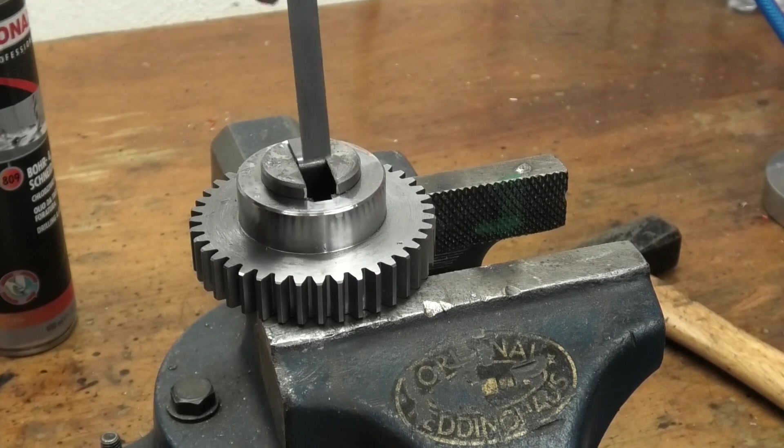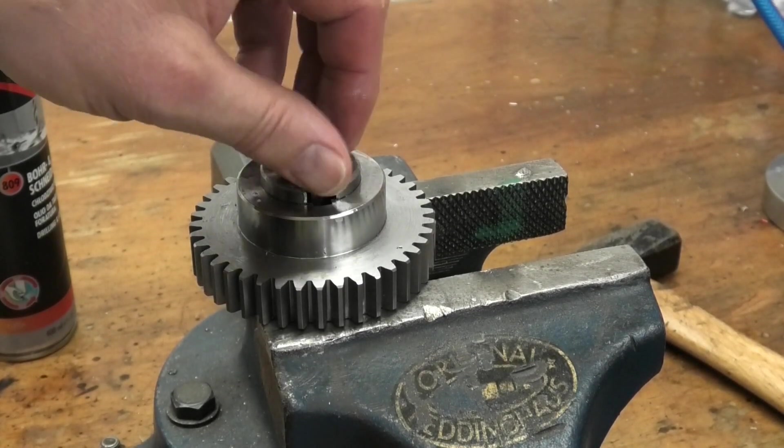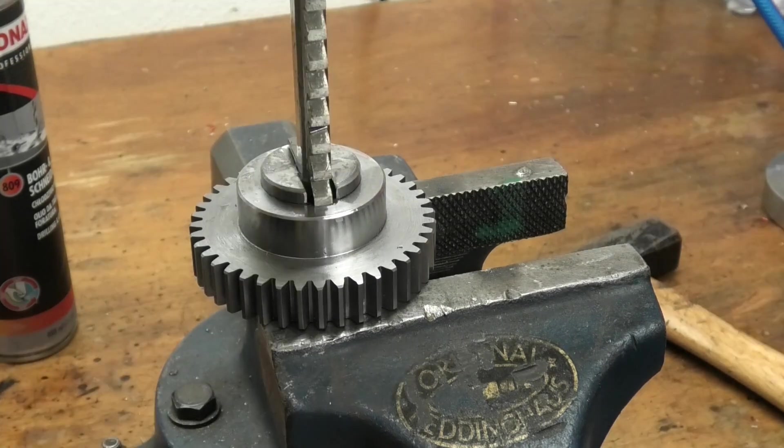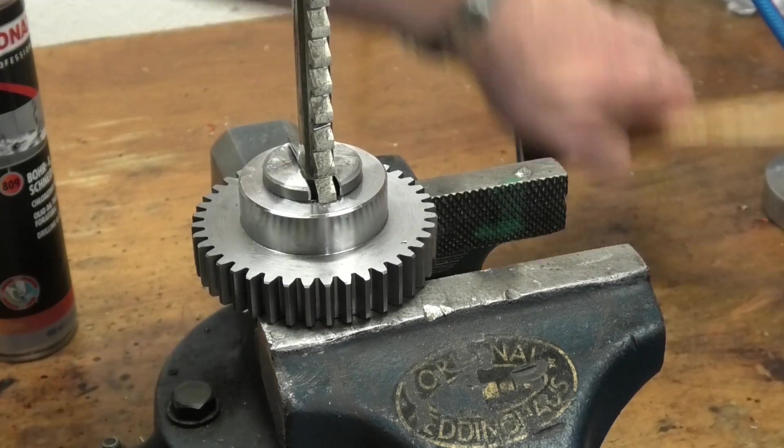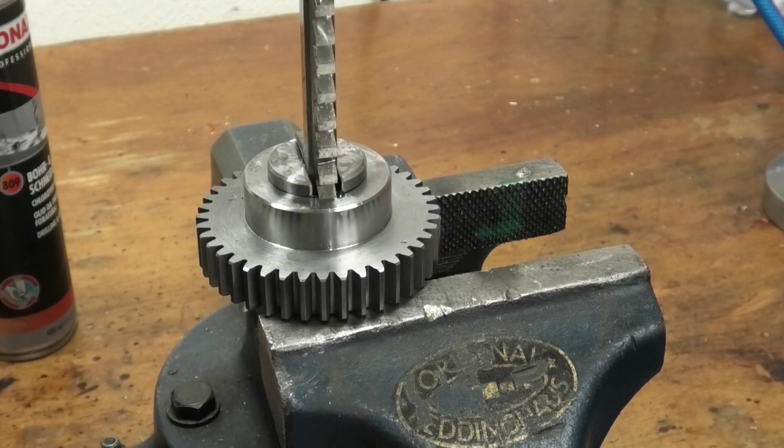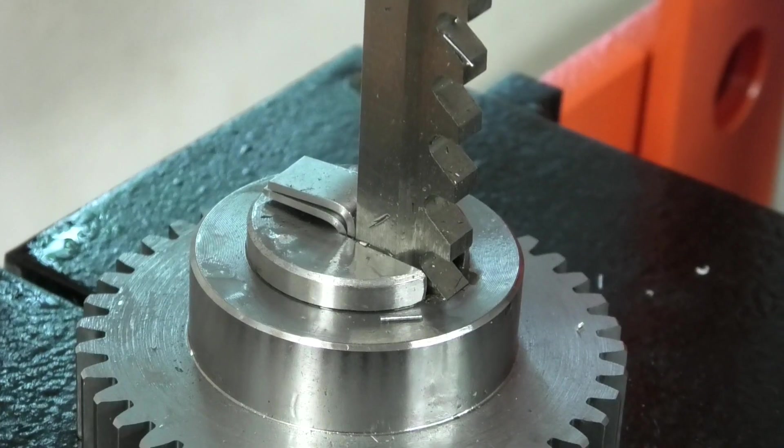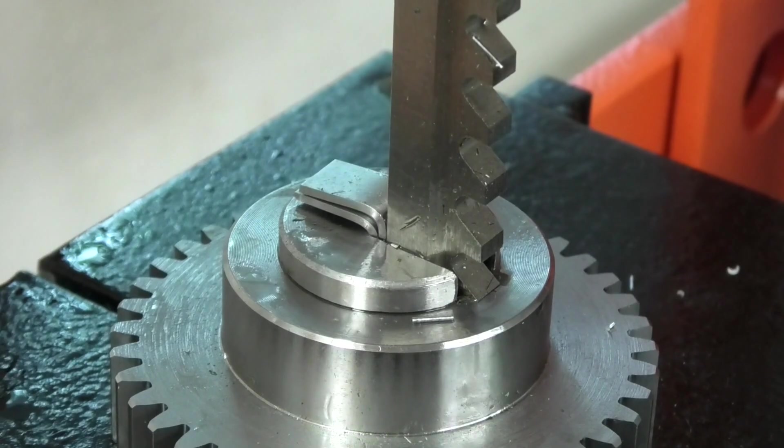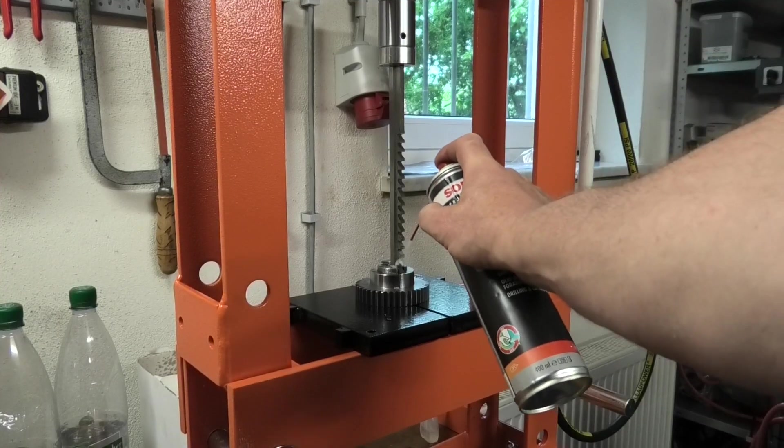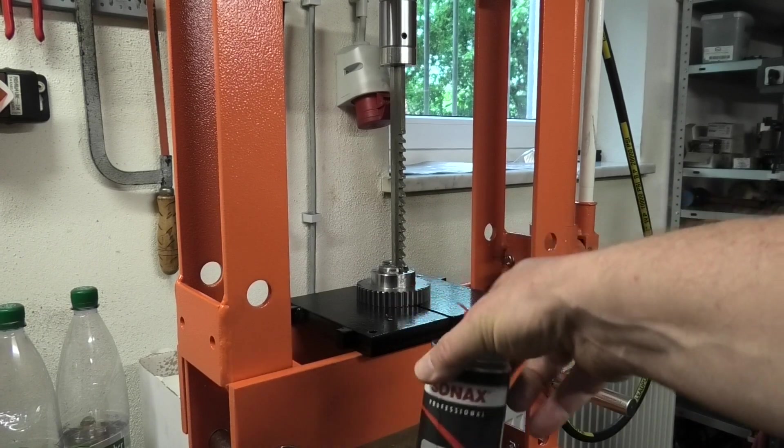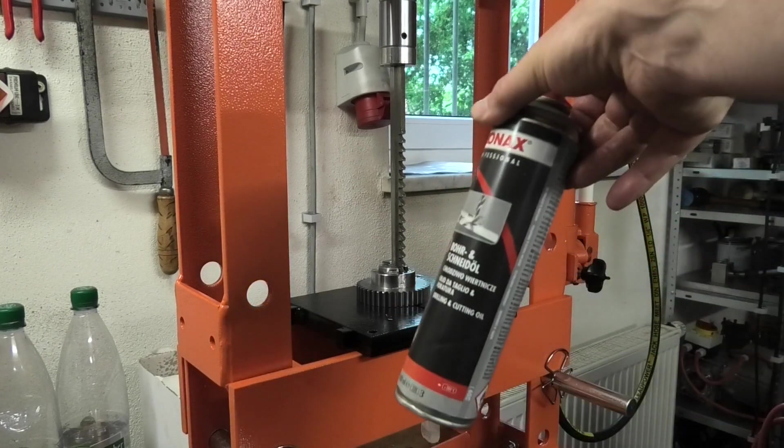A second shim, 1.2 millimeters thick, is added for the third cut. A second shim, 1.5 millimeters thick, is added for the third cut.